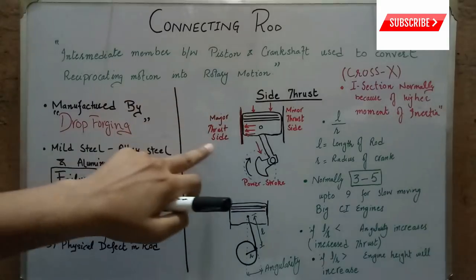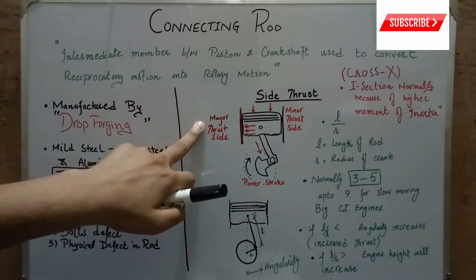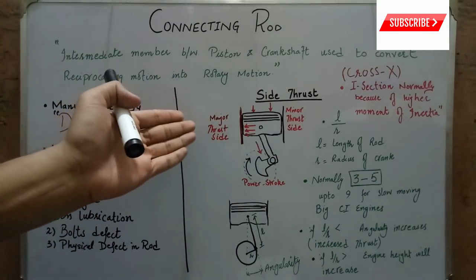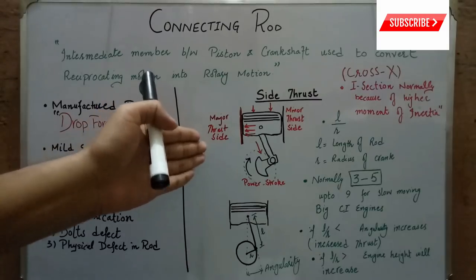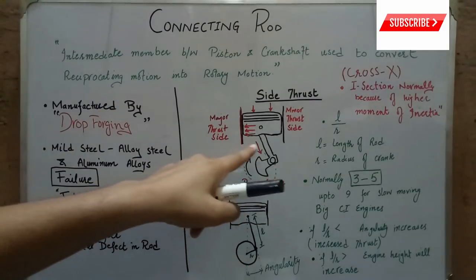That side is called the major thrust side, and whether it is left-handed or right-handed depends upon the direction of the crankshaft.